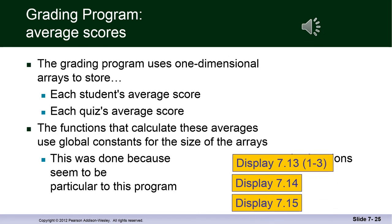The next few slides, which are the last slides in this chapter, review a program that stores grades. It uses one-dimensional arrays to store each student's average score and each quiz's average score. Functions that calculate these averages use global constants for the size of the arrays. This is done because the functions seem to be particular to this program.